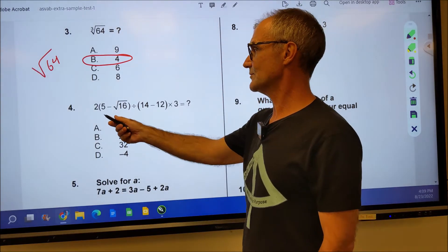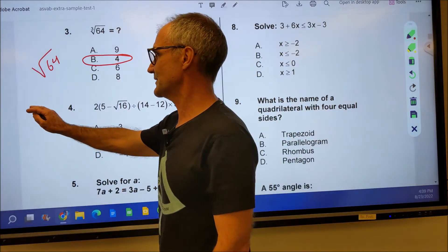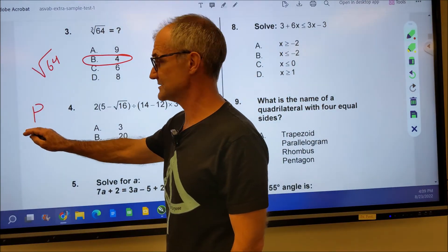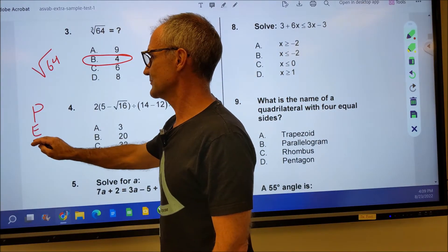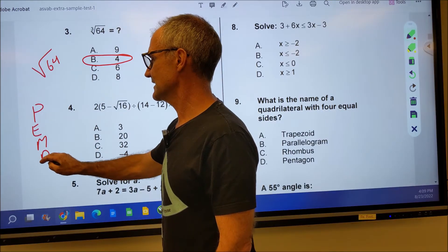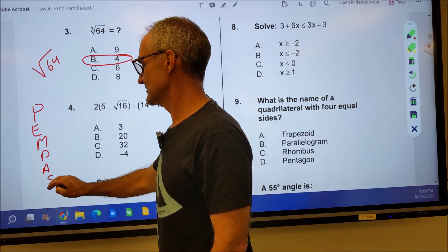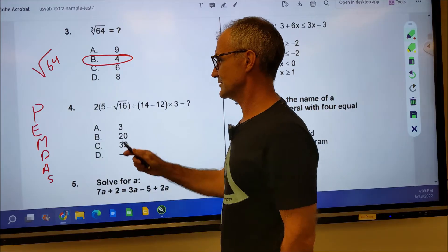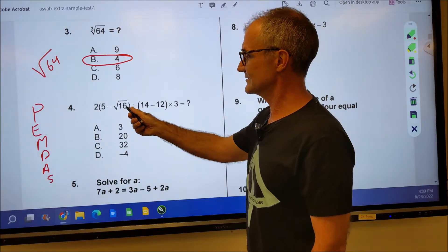Problem number four is order of operations. The rule for this is PEMDAS, parentheses first, then exponents, multiplication and division, and then addition, subtraction from left to right. So I'm going to do the parentheses first and I'm going to do that square root.